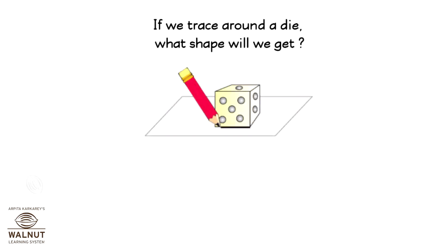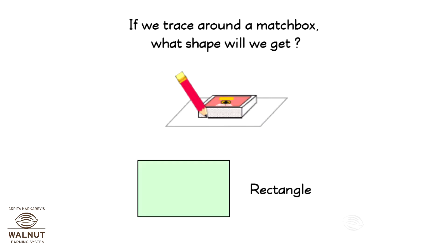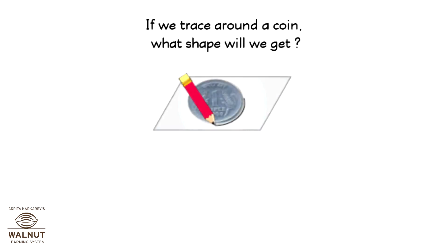If we trace around a die, what shape will we get? Square. If we trace around a matchbox, what shape will we get? Rectangle. If we trace around a coin, what shape will we get? Circle.